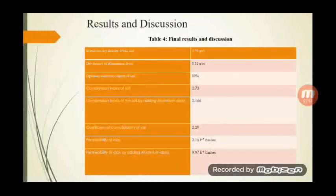These are the final results of our study. The clay initially had a permeability of 2.15 × 10⁻⁷ cm/s. By adding the additive, it further reduced to 9.9 × 10⁻⁸ cm/s, that is a reduction of approximately 2.13 percentage. We also noted various results including the coefficient of consolidation of soil and the compression index of soil by adding aluminum dross.